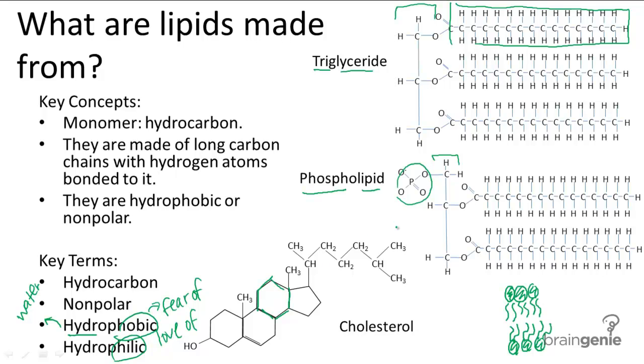Cholesterol is only found in animal cells, generally embedded in the cell membrane. All of the steroid hormones in the body are derived from cholesterol, like estrogen, testosterone, and progesterone.